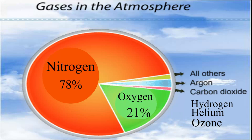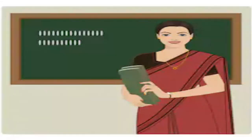Earth's atmosphere is composed of about 78% nitrogen, 21% oxygen, and 1% includes argon, carbon dioxide, hydrogen, helium, and ozone.